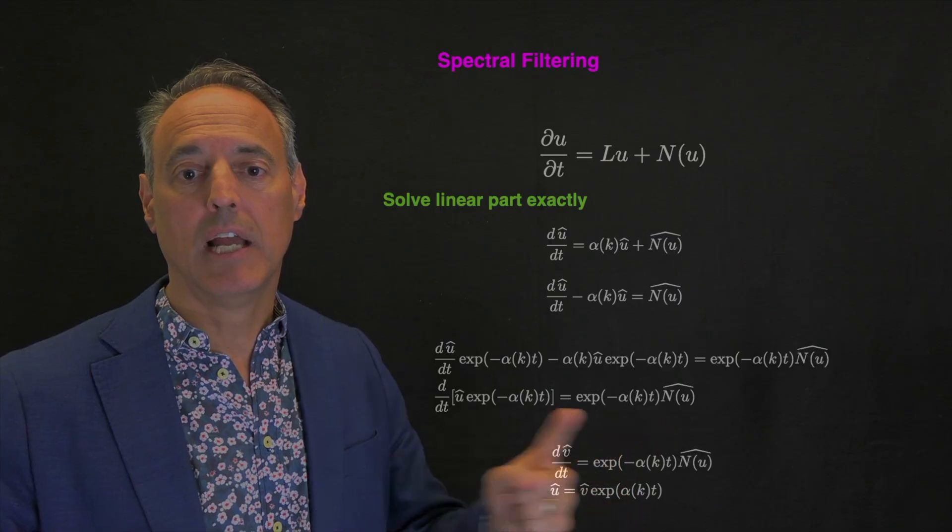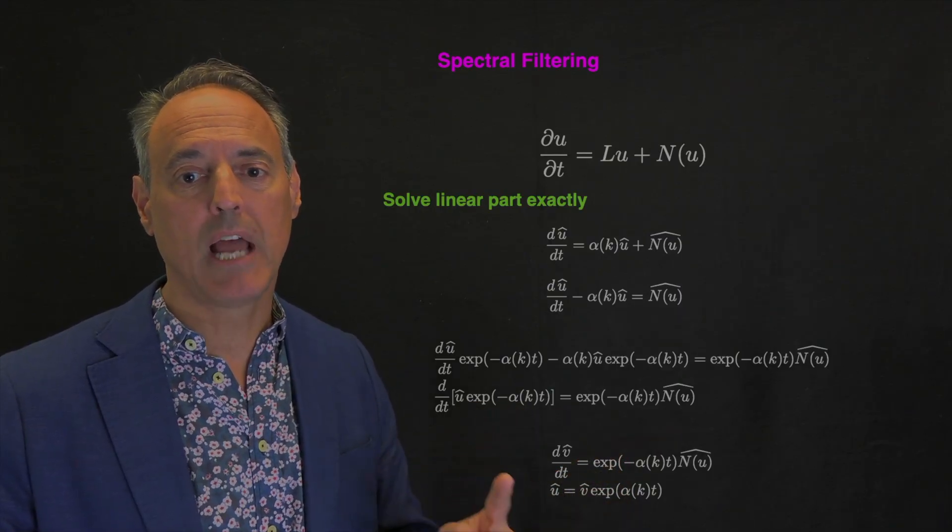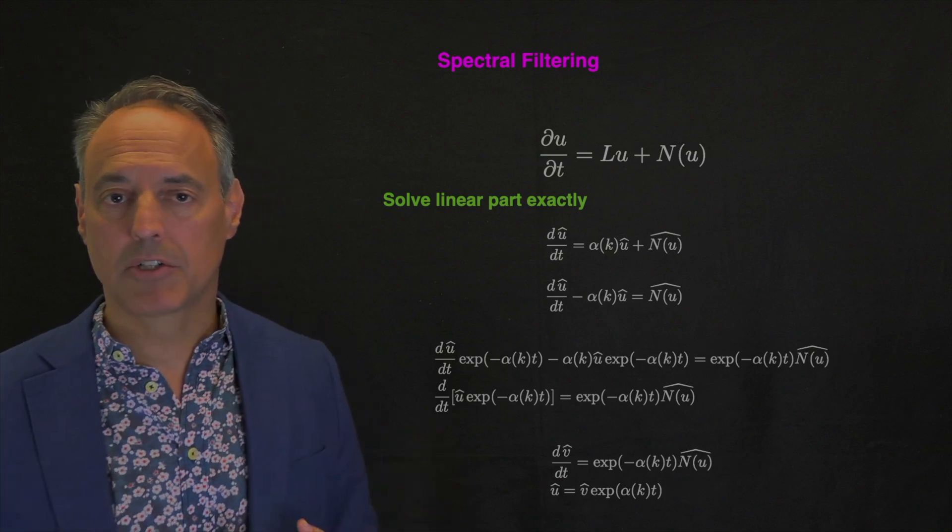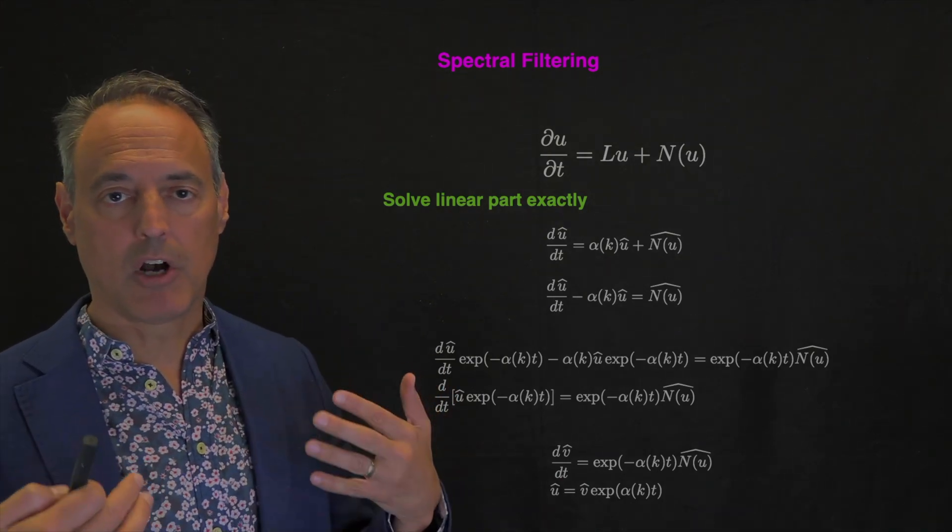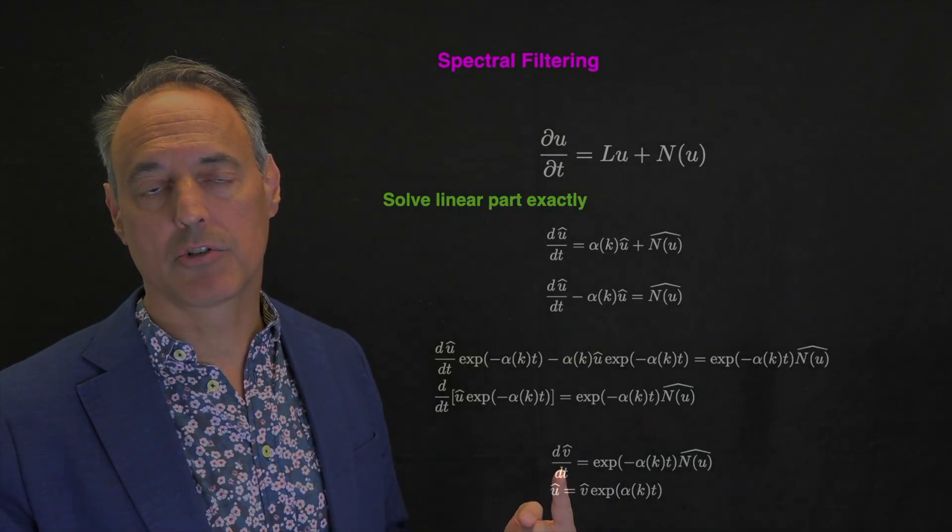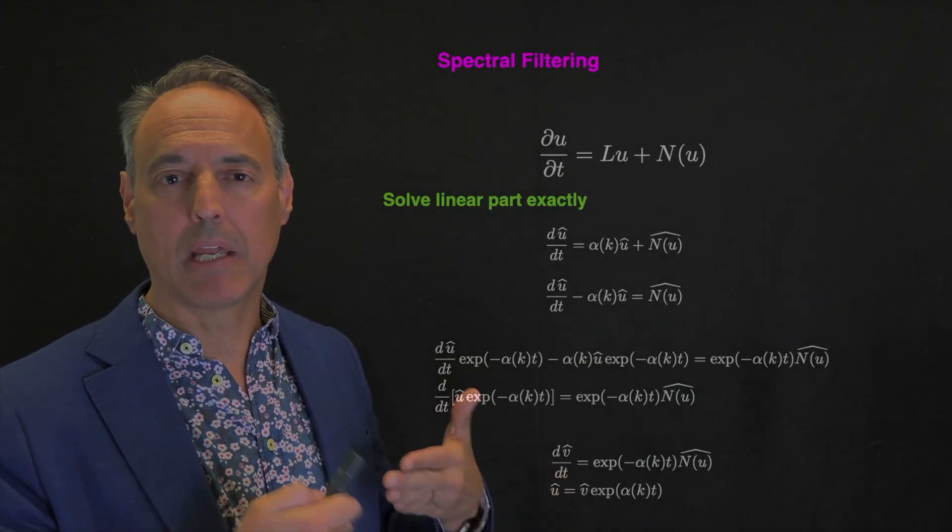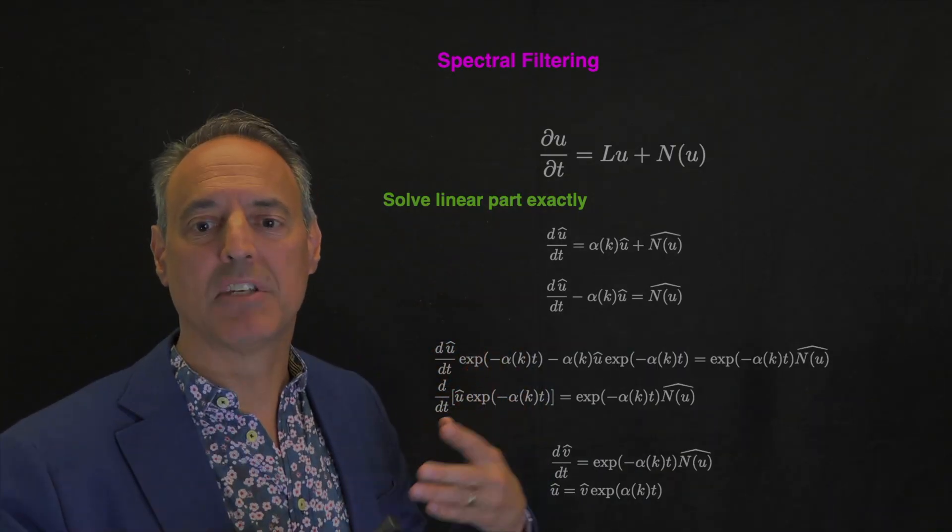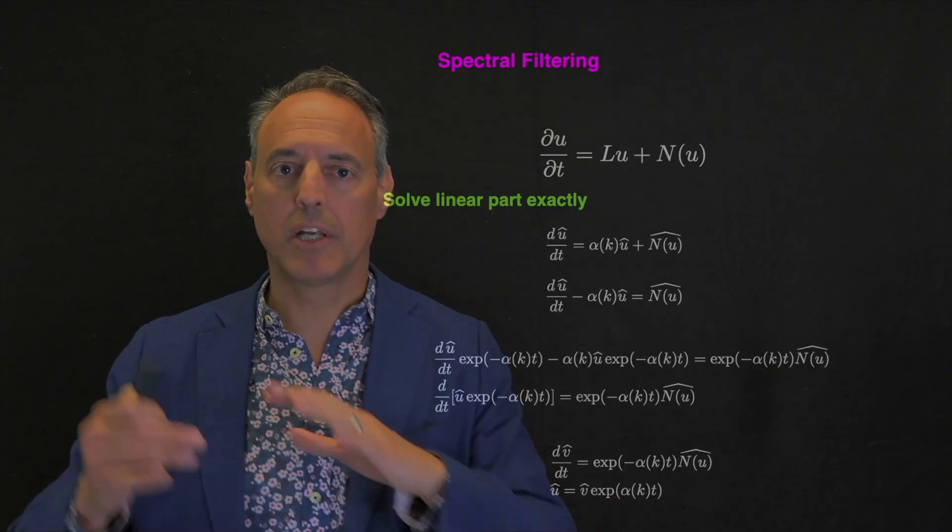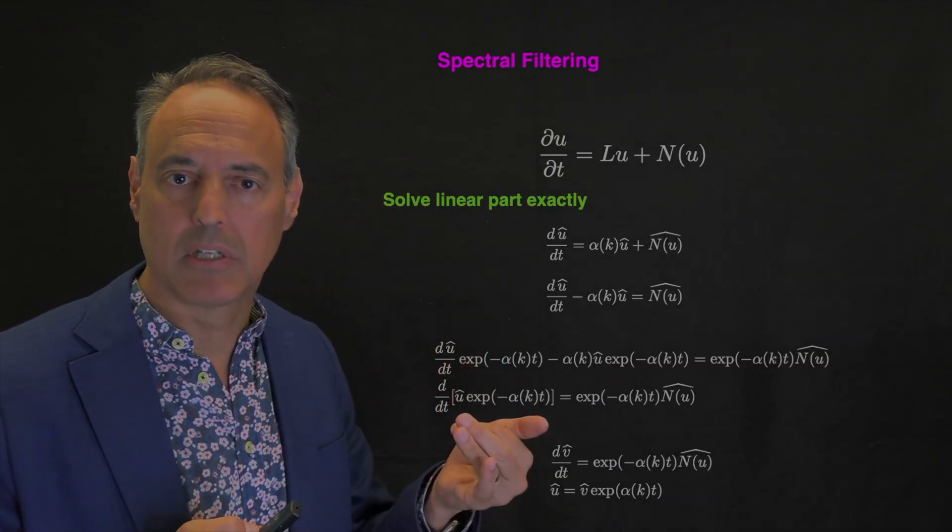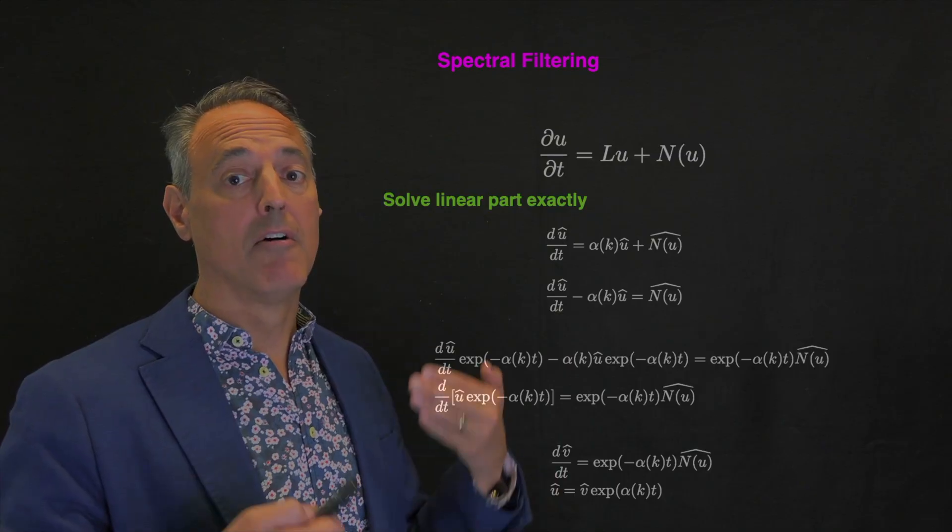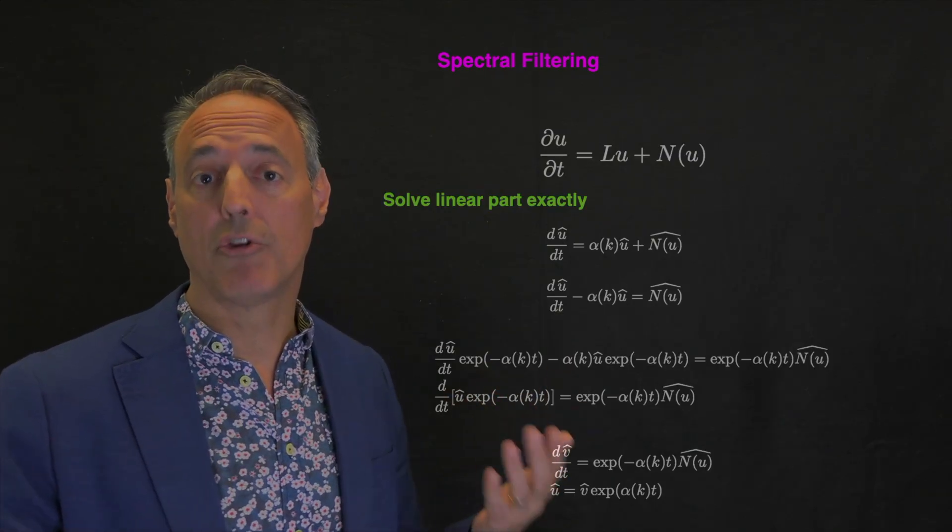But now what I can do is take this linear part, move it over to the left-hand side and ask the same question. Is there something I could multiply both sides with, so that this side becomes a perfect differential? I'm going to multiply by e to the minus α(k)t. And then what that means is the left-hand side now becomes a perfect differential. So d/dt of this left-hand side equals this right-hand side. So what I've effectively done is I've solved for the linear part exactly. That is the solution to this linear part. In fact, if that wasn't here, I'd have the exact solution. So I'm just saying, I already know the solution exactly to the linear part. Let's actually put it in explicitly. And this is what I get here with variable V.